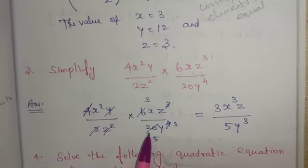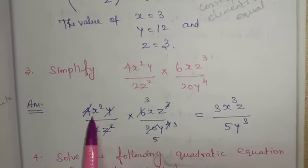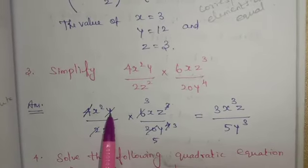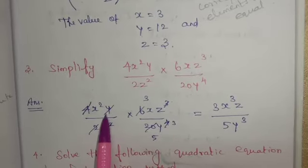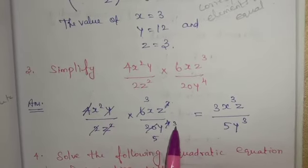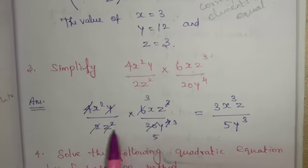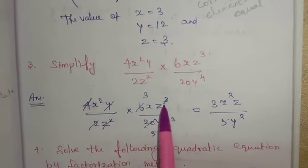4 and 20 cancel to give 1 and 5. Y and Y⁴: Y cancels once, leaving Y³ in denominator. 2 and 6 give 3. Z² and Z³ combine.